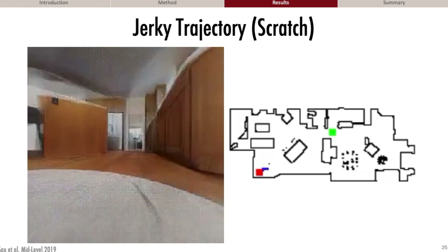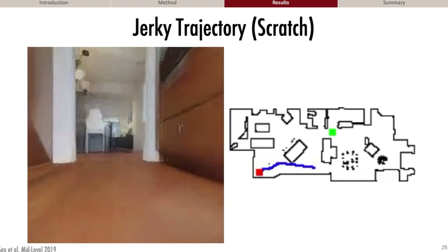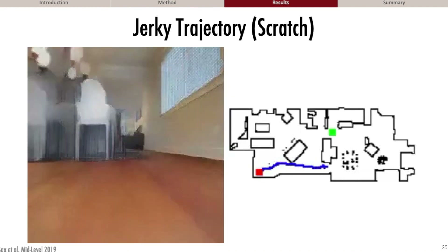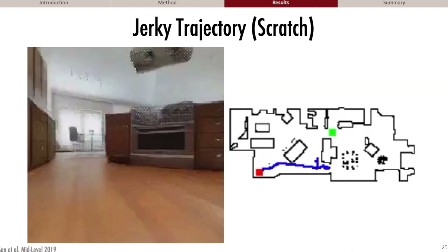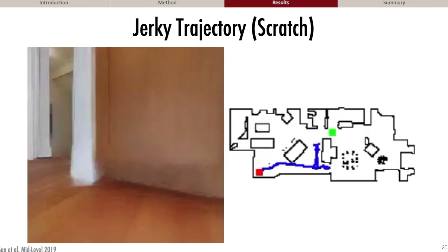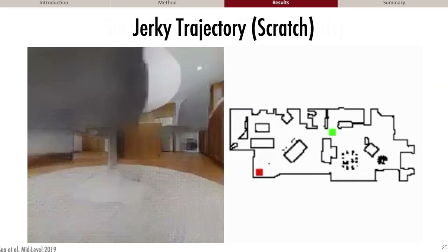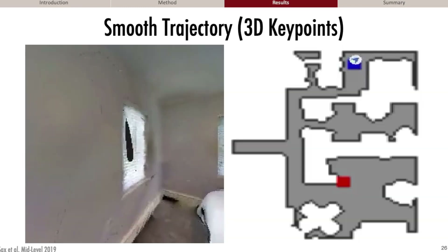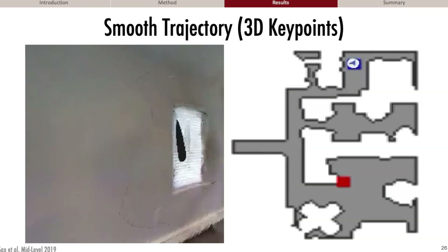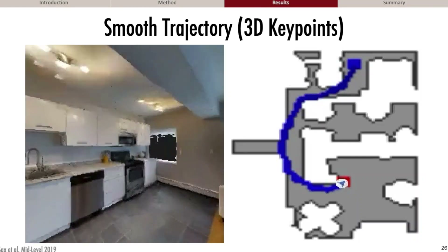This is an example of a jerky trajectory typical of something trained from scratch — you can see the agent shakes left and right. We're not the first to notice this; for example, Bonstell et al. sought to alleviate this problem by incorporating optimal control. We find that simply integrating better vision goes a long way towards solving the issue, and of course the two methods could be combined.